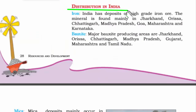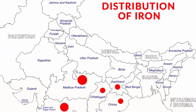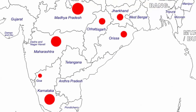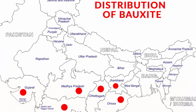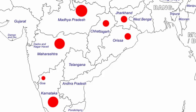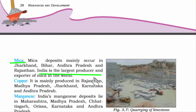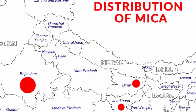Now let's look at the distribution of minerals in India. India has deposits of high-grade iron ore. Major bauxite producing areas are shown on the map — remember, bauxite is an ore of aluminium. India is the largest producer and exporter of mica in the world. Look at the map to see the places.